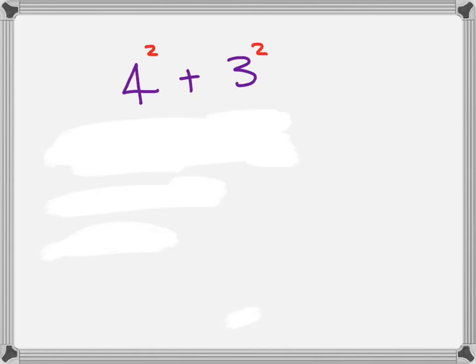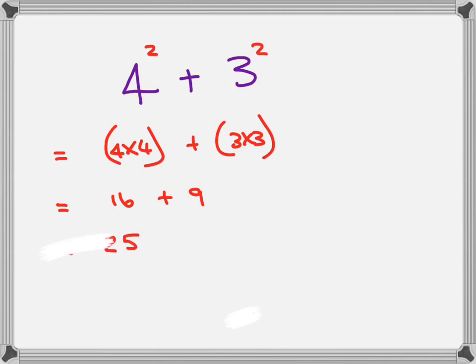Okay, the last example would be 4 to the 2 plus 3 to the 2. It would be written out like that. You've expanded them. And then you're going to come to the answers of the brackets. And then you're going to find your answer is 25.